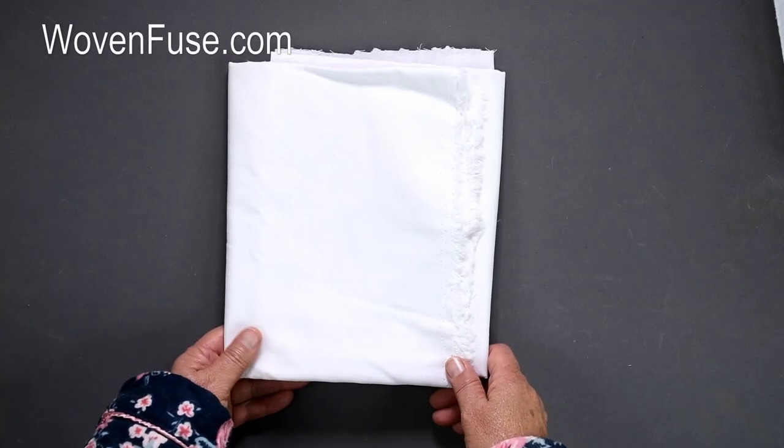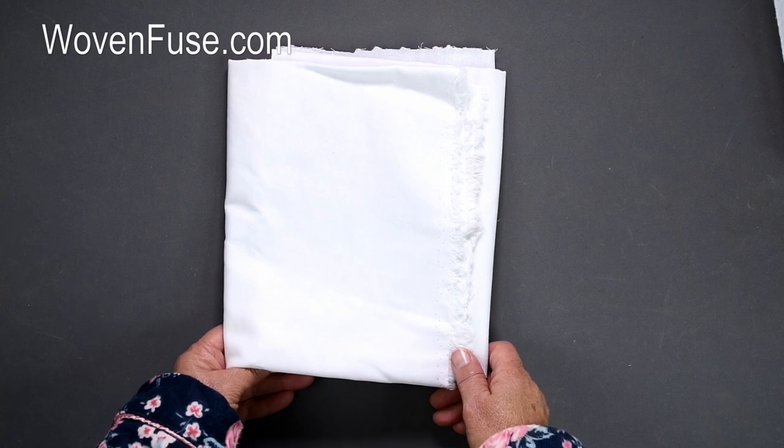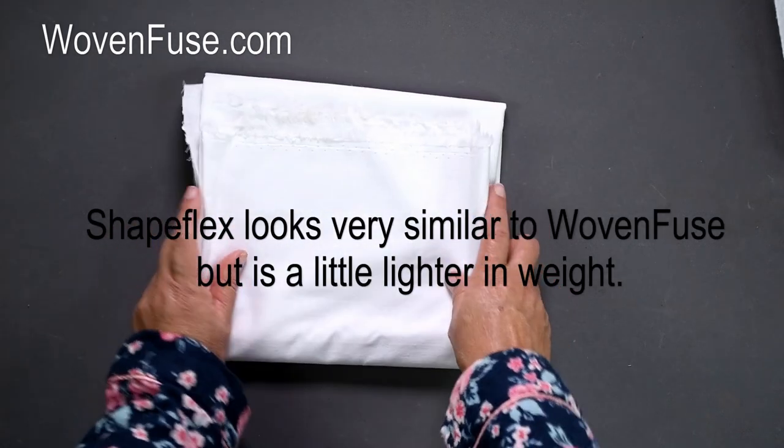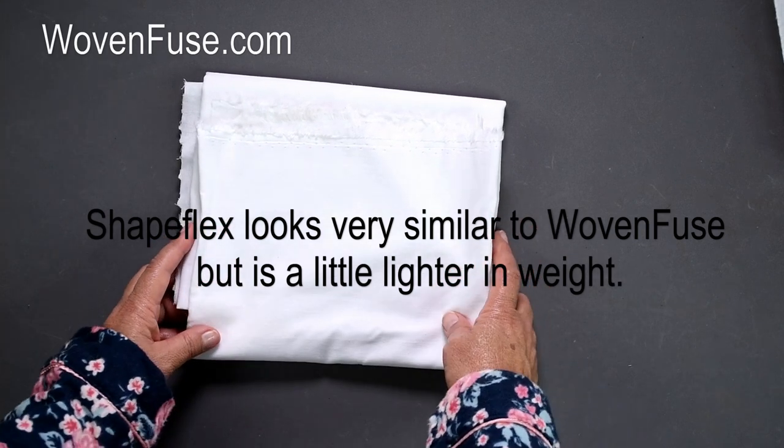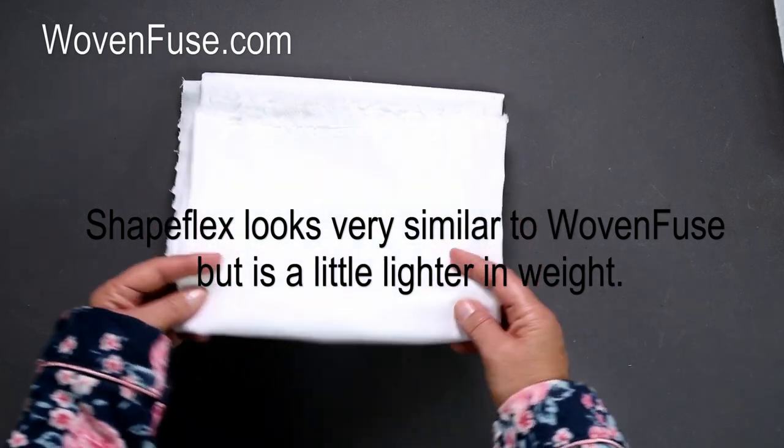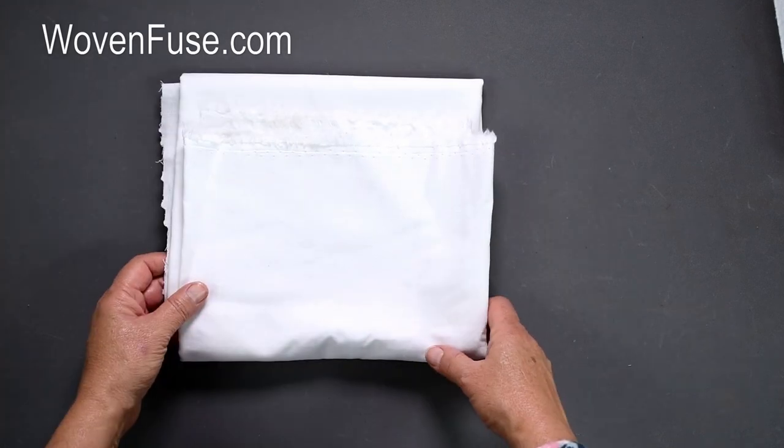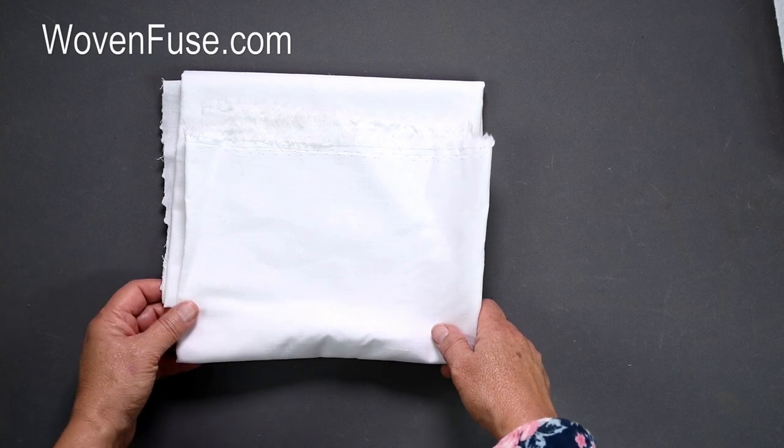One of the most common woven interfacings used in bag making is Pellon Shapeflex SF101. You'll often see it in the supplies list called either Shapeflex or SF101 but either name refers to the same one. Up until recently the Shapeflex was my favorite interfacing and I used it in all my bags and wallets.